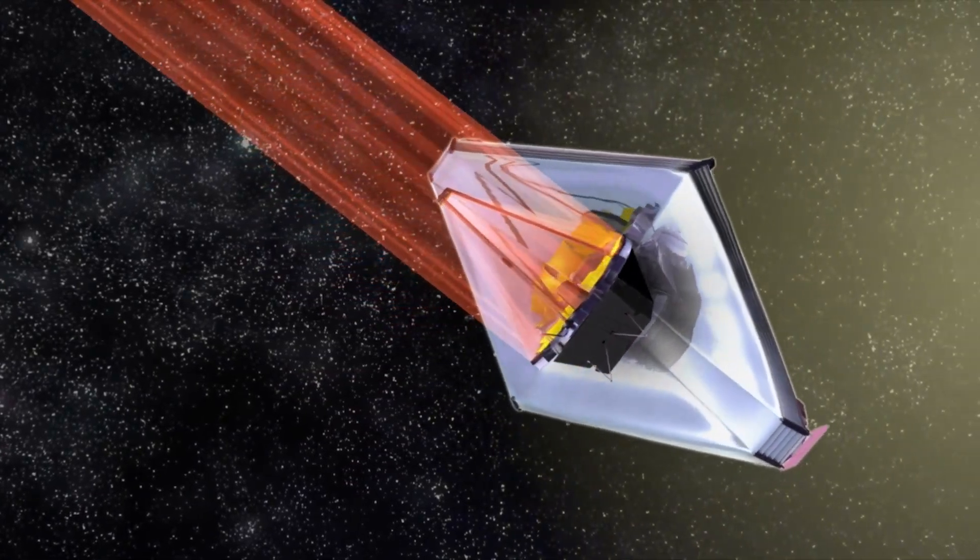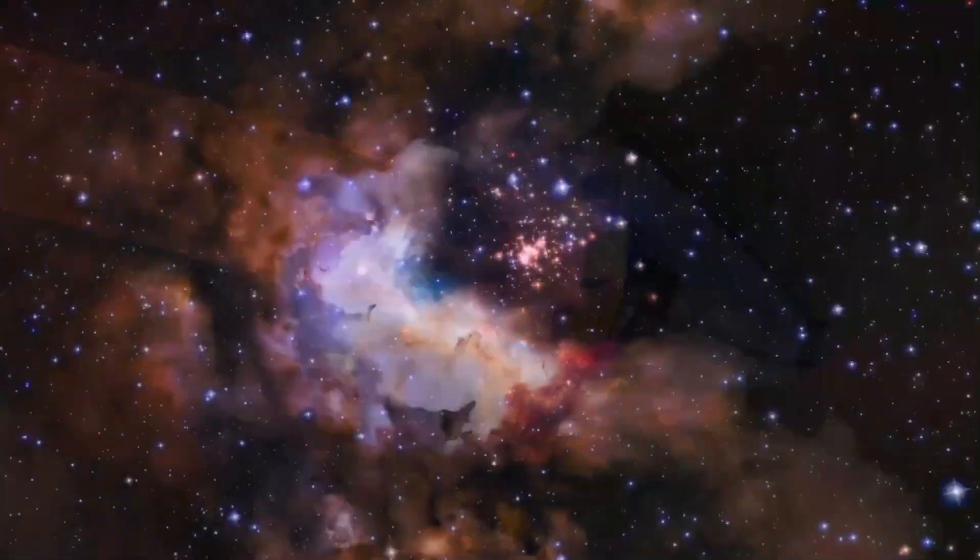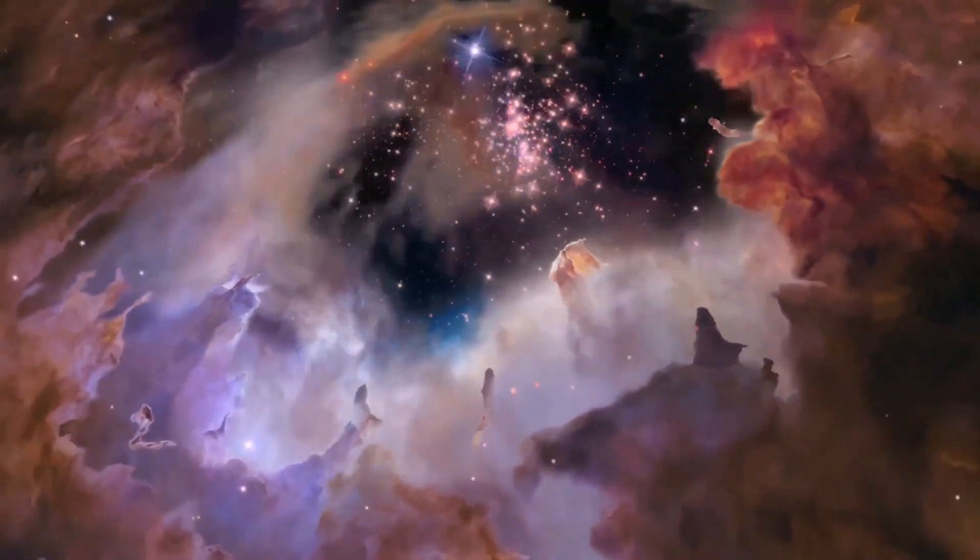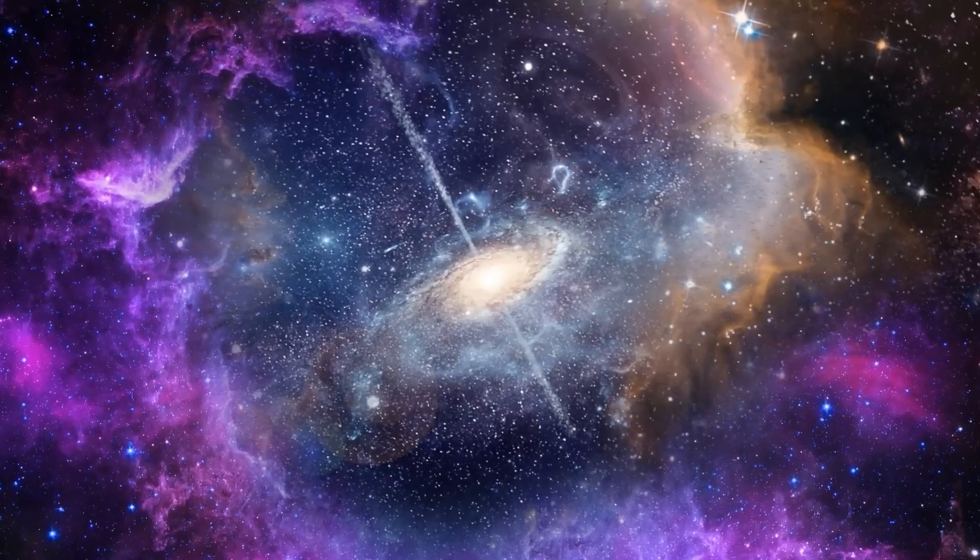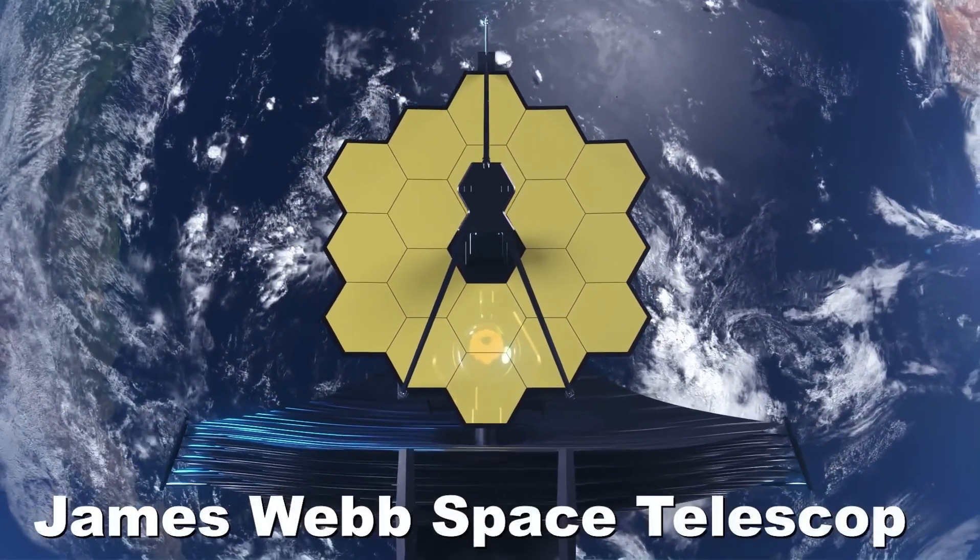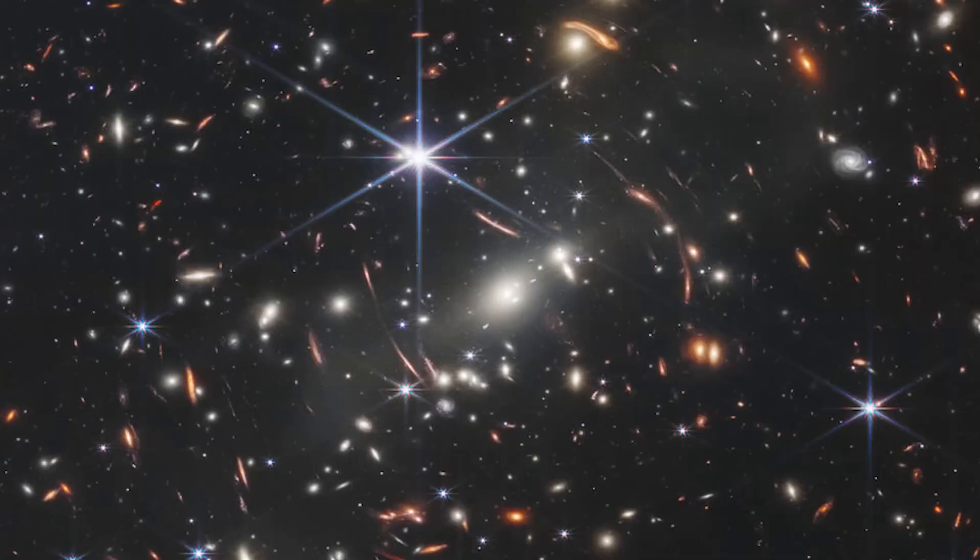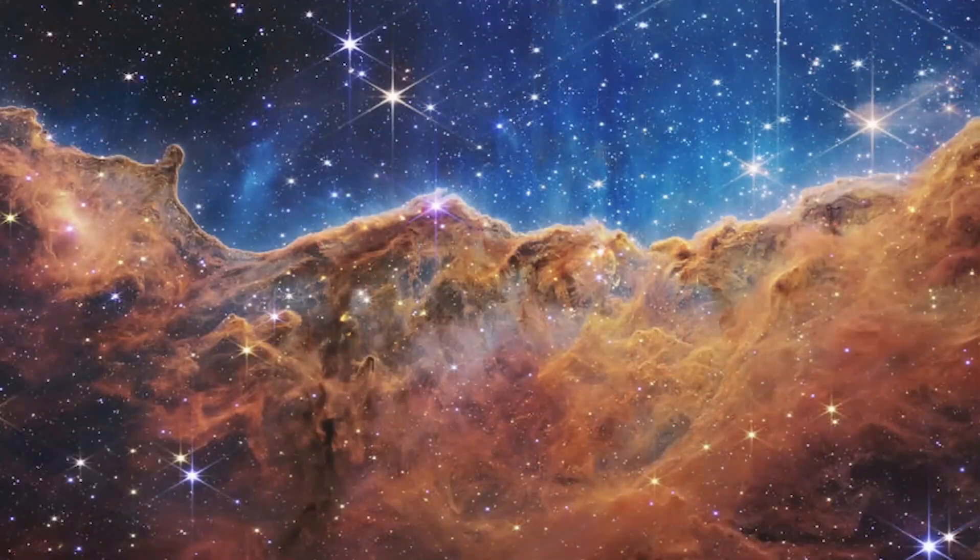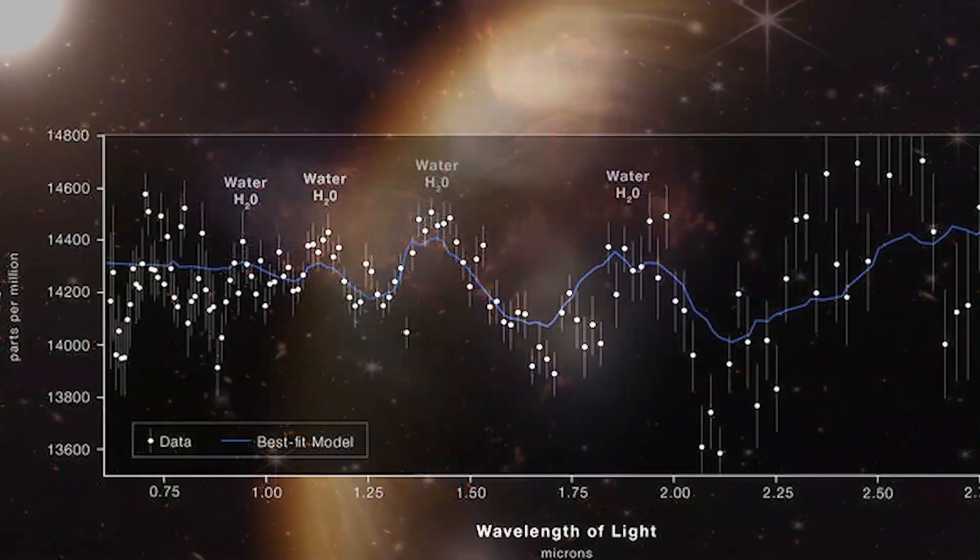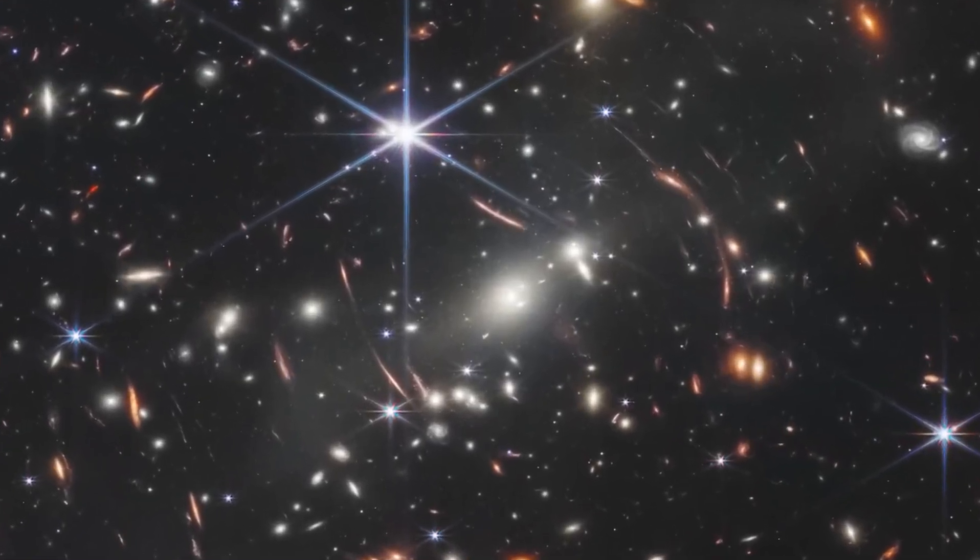With the James Webb Space Telescope fully operational, we have its first-ever perfect image. The photo shows a spiky image of a far-away star, photobombed by thousands of ancient galaxies. The $10 billion telescope successfully aligned with its near-infrared camera, NIRCam, and took its first-ever clear image.